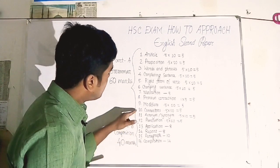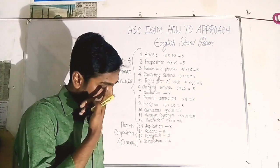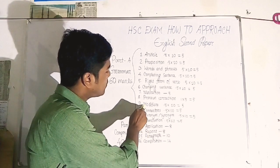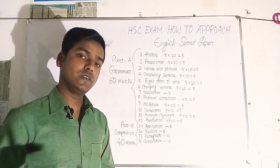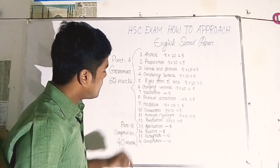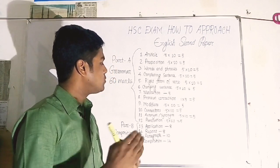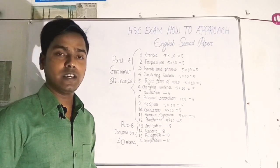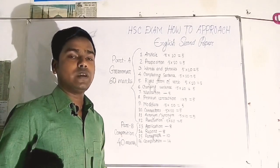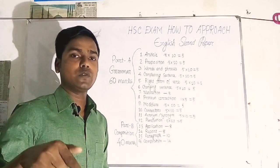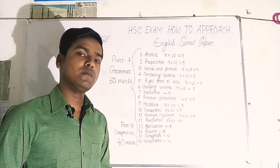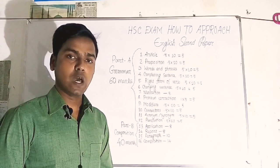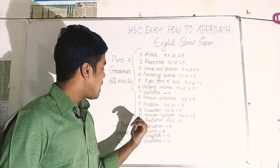Number 10 is Connectors — you need to correctly use connecting words to join sentences. Number 11 is Antonym and Synonym. For this item, a given word is provided and you must write its antonym or synonym. Total mark is 5.